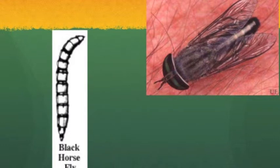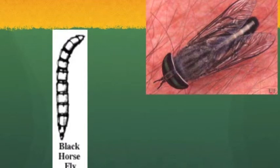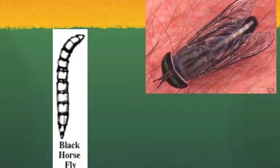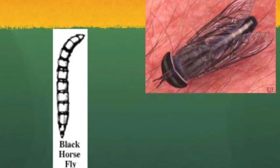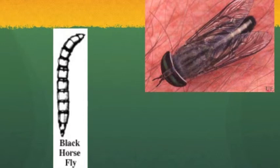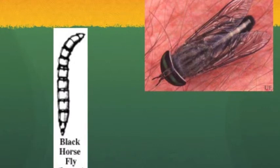Due to the multiple hosts that these flies feed from, they are vectors of various diseases. These diseases include anthrax, tularemia, anaplasmosis, hog cholera, equine infectious anemia, and filariasis. Human bites could lead to various sufferings including severe lesions, high fever, and general disability in the body.